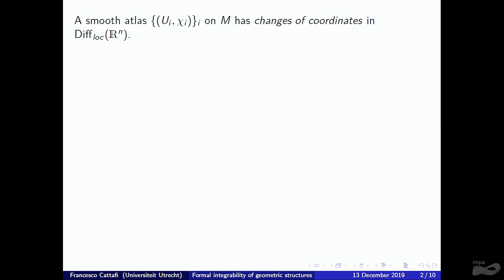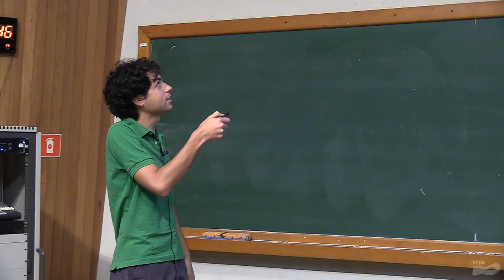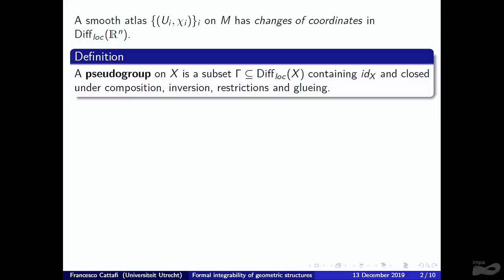Starting with a basic remark: a smooth manifold is defined by a smooth atlas — a collection of charts over open sets — where the key property is that changes of coordinates are diffeomorphisms between open sets of R^n. By Diff_loc(R^n) we denote the set of all diffeomorphisms between open sets of R^n. Many kinds of geometric structures can be described by a smooth atlas where the coordinate changes satisfy further properties, belonging to some special subset of Diff_loc(R^n), which is precisely a pseudogroup.